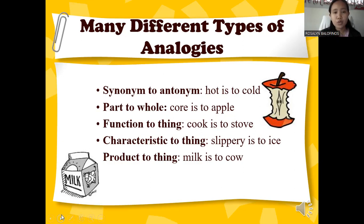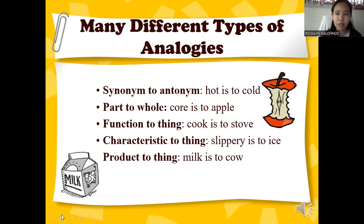Next is part to whole — for example, 'core is to apple,' since an apple is not complete without its center. Then function to thing — 'cook is to stove,' meaning we use a stove to cook. Characteristic to thing — 'slippery is to ice,' describing how ice is slippery. And product to thing — milk is produced from a cow.